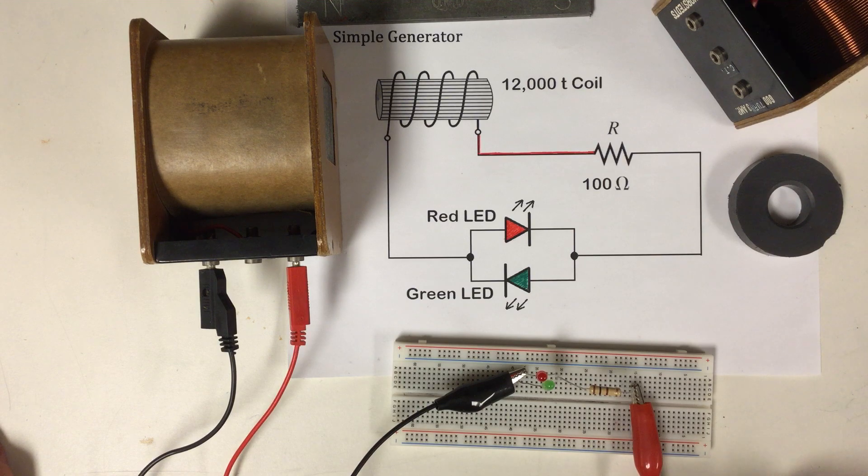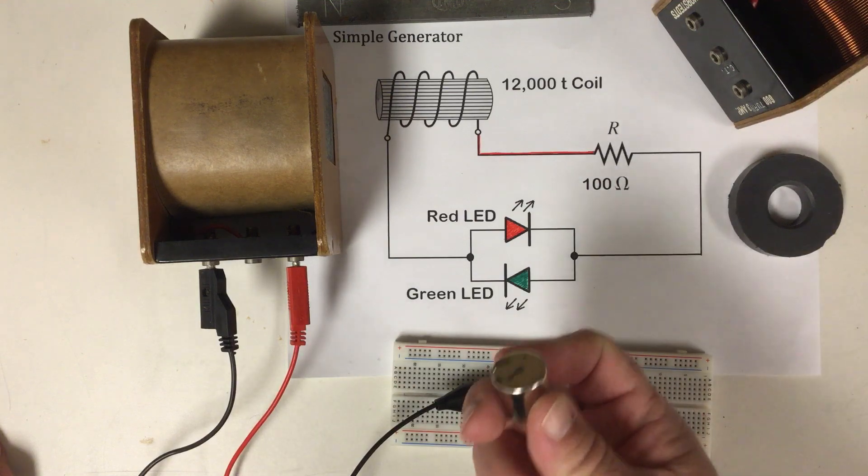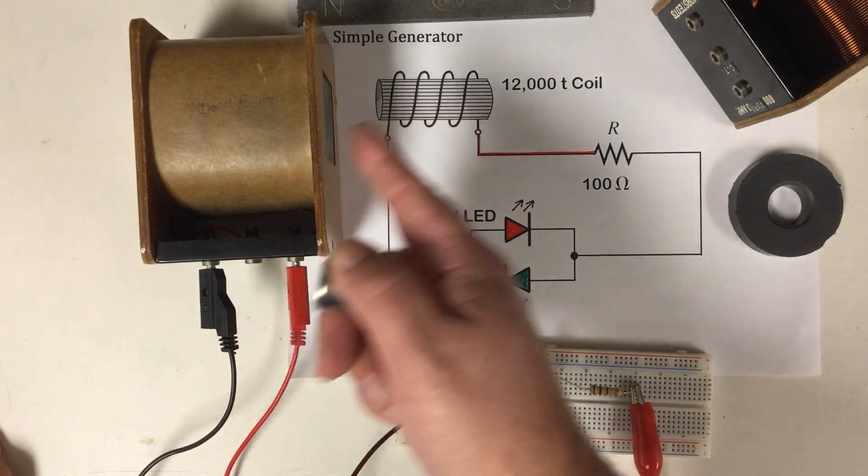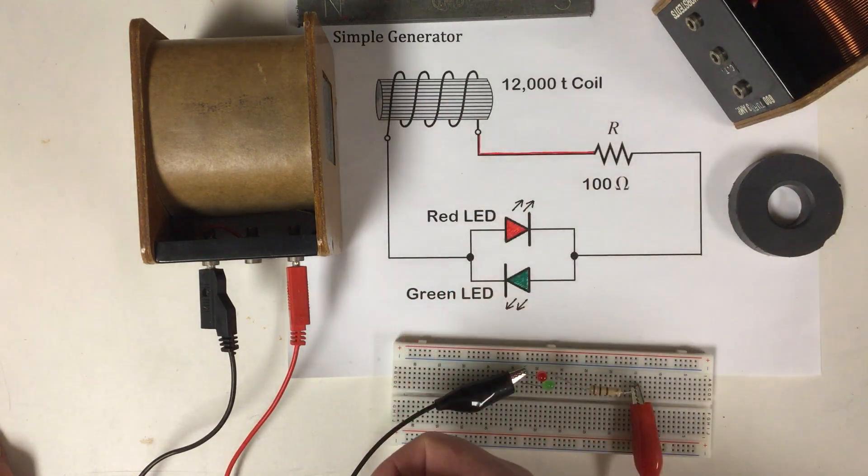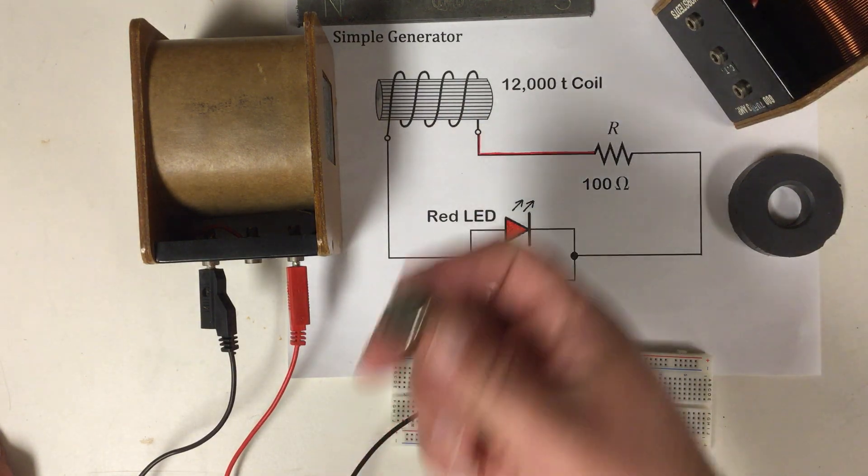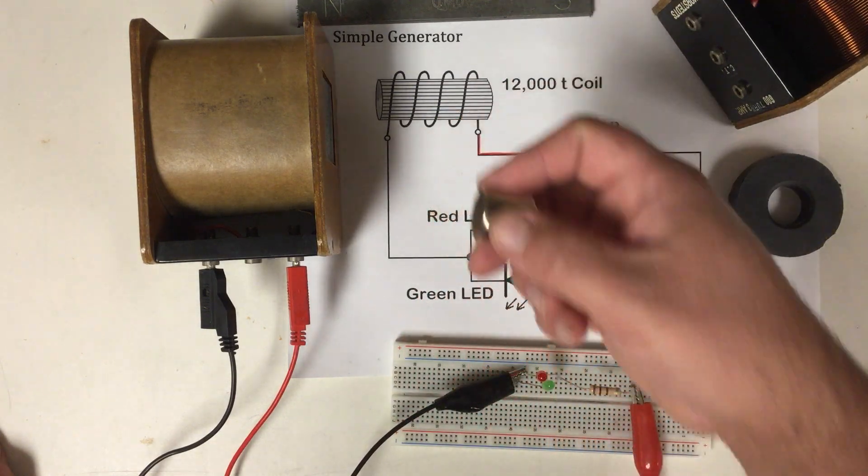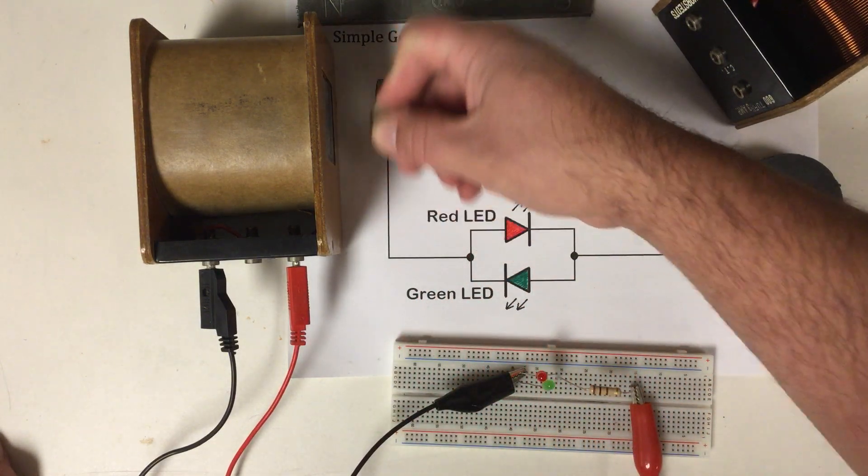Faraday's law of induction says that anytime there is an interaction or a relative motion between a magnetic field and a coil, then a voltage will be induced. So I'm going to take my magnetic field and I'm going to interact with the coil.